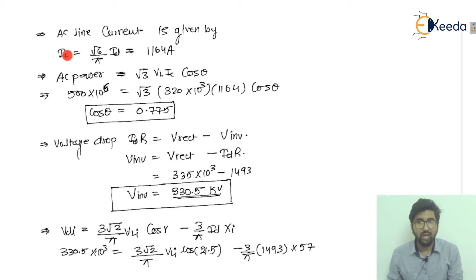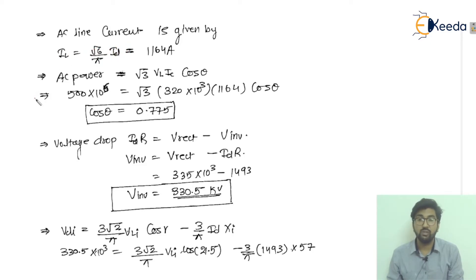AC line current is given by IL = √6/π × ID. Please remember this formula as it will be used in most numericals. So IL = √6/π × 1493 = 1164 amperes.